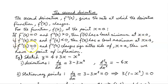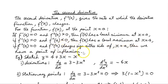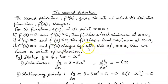If f double dash of a is equal to 0 and f double dash of a changes sign either side of x equals a, then we have a point of inflection. So: local minimum if f double dash of a is greater than 0; local maximum if f double dash of a is less than 0; and a point of inflection if f double dash of a changes sign either side of x equals a.